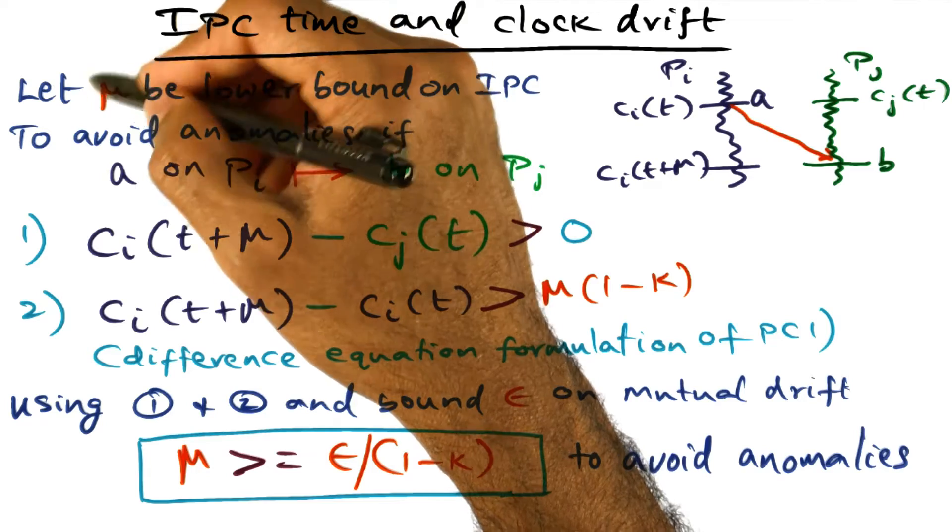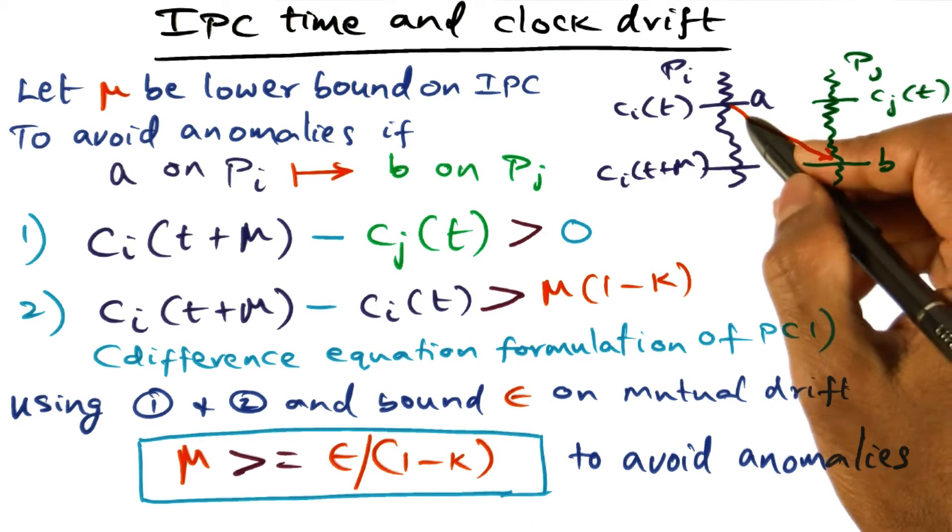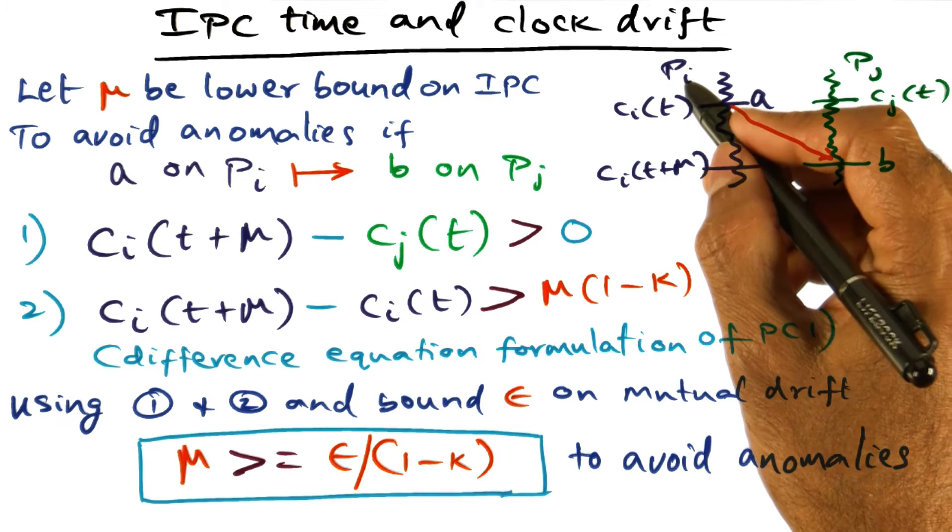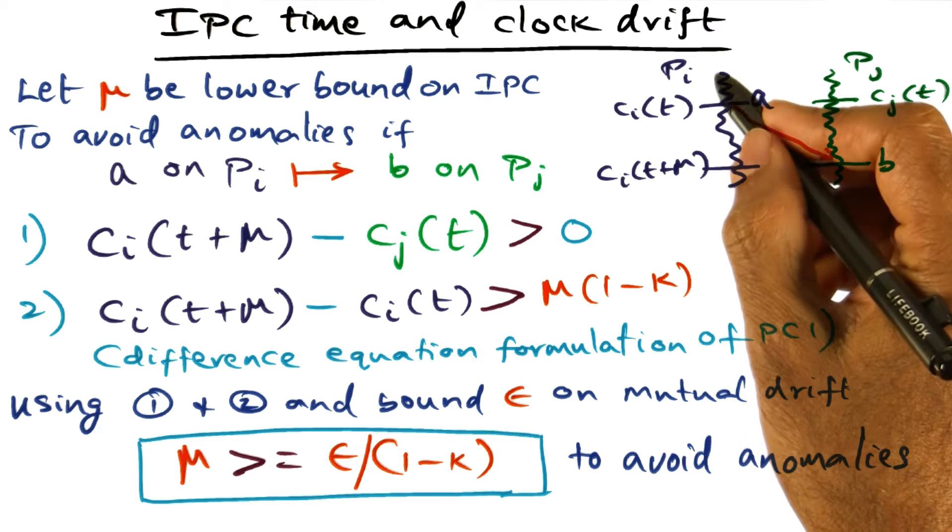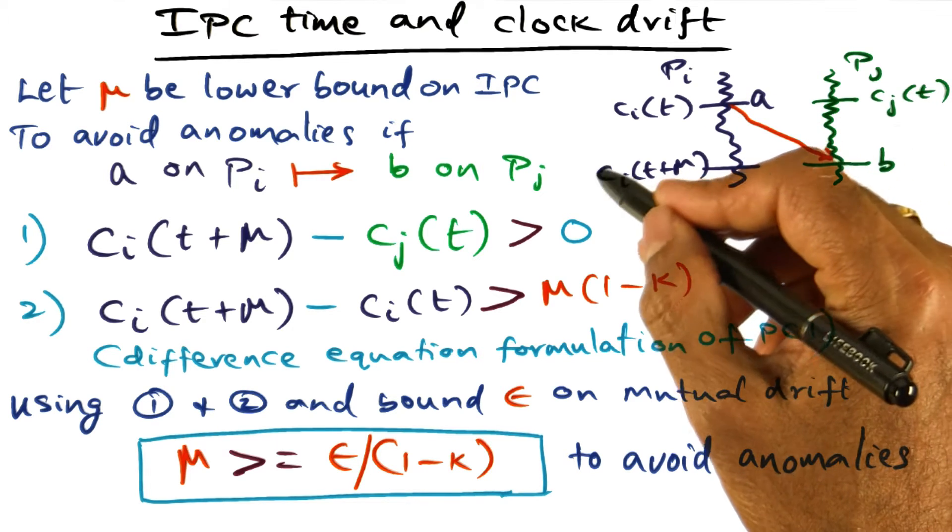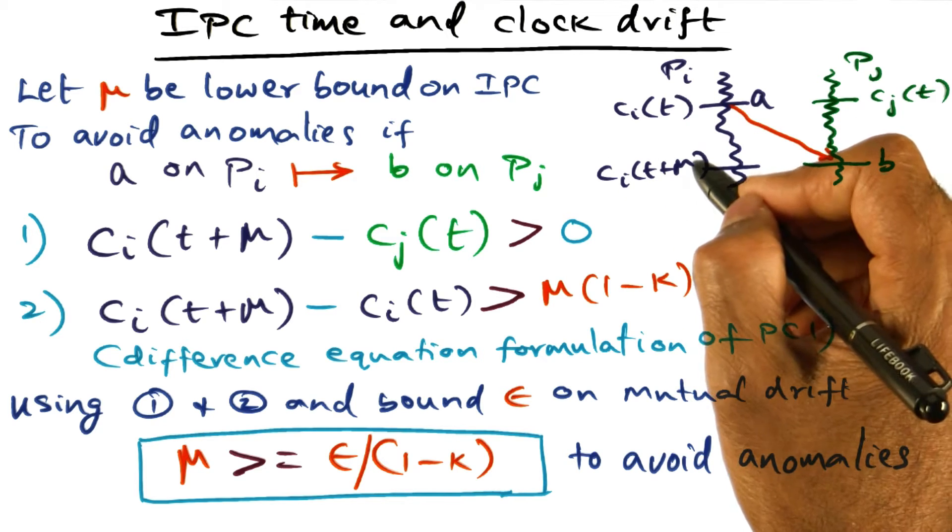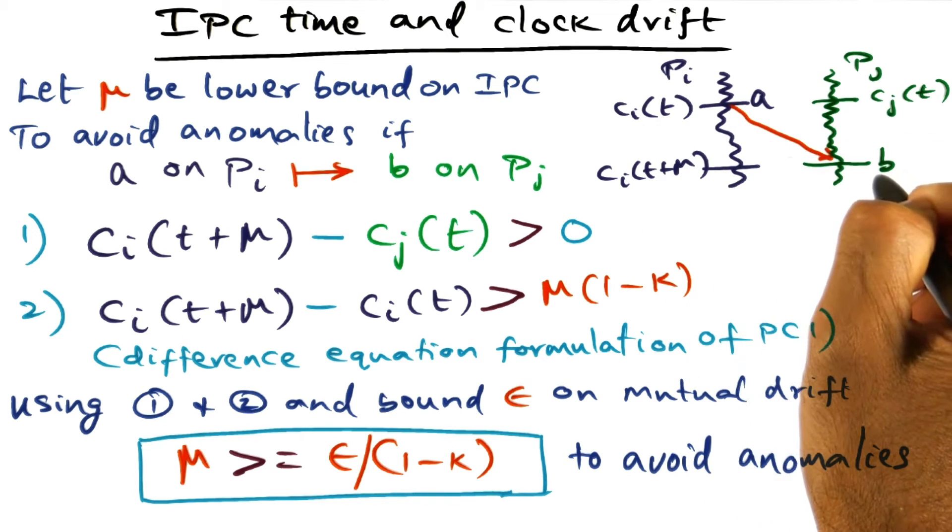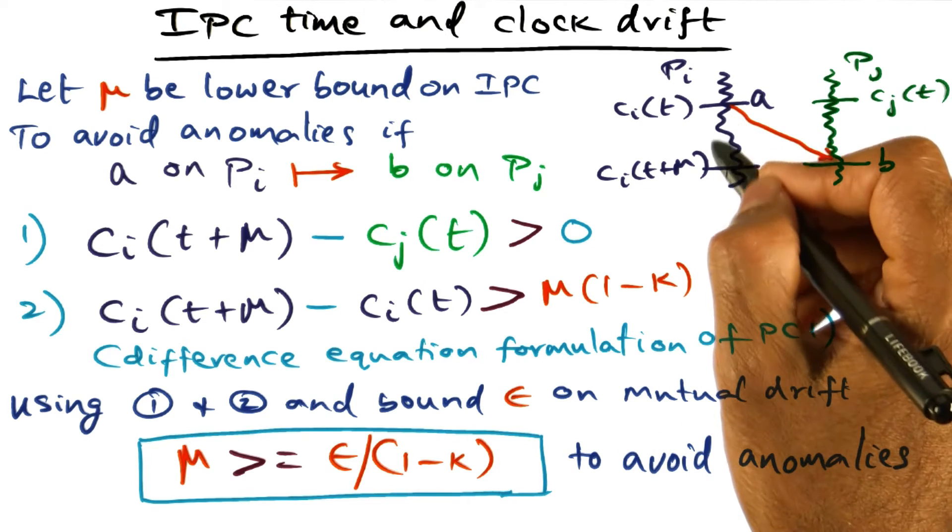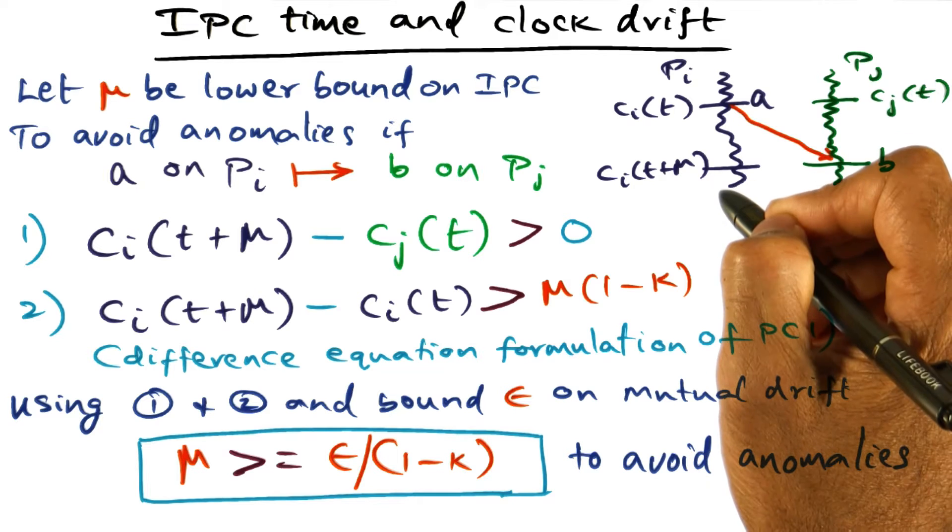That's coming from this mu, the lower bound in IPC. So if the message is sent at ci of t with respect to pi, then the time on pi when this message is received over here is going to be ci of t plus mu. This is the local reading of the clock when the message would have arrived at pj.